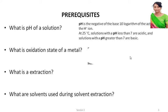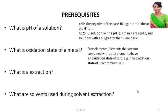What is the oxidation state of a metal? Free elements — the elements written in the periodic table — have oxidation state 0. For example, chromium as written in the periodic table has oxidation state 0. When this zero oxidation state metal loses electrons, it gets a positive oxidation state. When it gains electrons, it gets a negative oxidation state. The charge obtained by the metal by either losing or gaining electrons is considered its oxidation state.